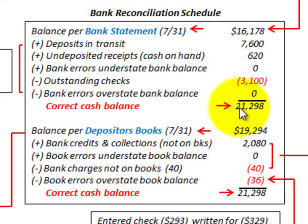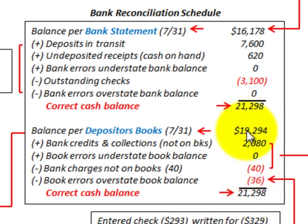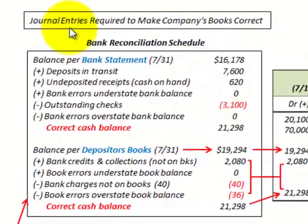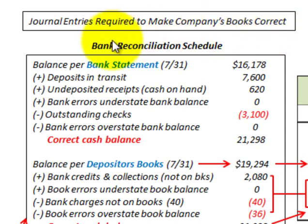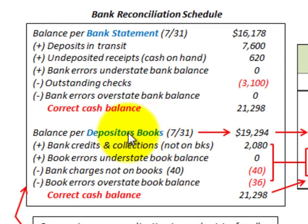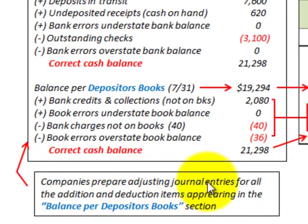The balance per the bank statement at $21,298 equals the correct cash balance per the depositor's books at $21,298 — these have to be equal. Next, we're going to look at the adjusting entries we have to make to the company's books to correct them to the correct cash balance. The journal entries are based off this bank reconciliation schedule, working off the balance per the depositor's books section.